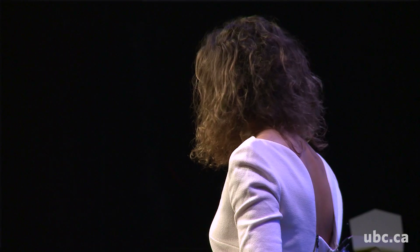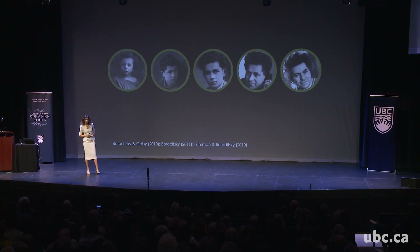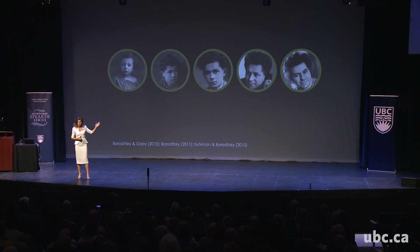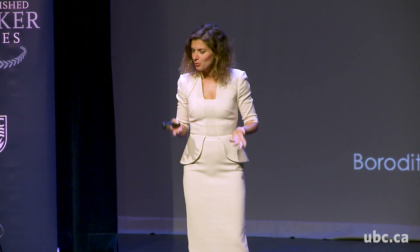People who speak languages like this stay oriented extremely well — they actually stay oriented much better than we used to think humans could. Now, if folks in cultures like this organize space in cardinal directions, how do they think about time? These here are pictures of my grandfather at different ages. I take these pictures, put them in a stack, scramble them, hand them to you and say, lay these out in the correct order. The way I've put them out here is the way an English speaker would do it — from left to right. If you're a Hebrew or Arabic speaker, you might do it from right to left. What would the Kuuk Thaayorre do if they don't use left and right?